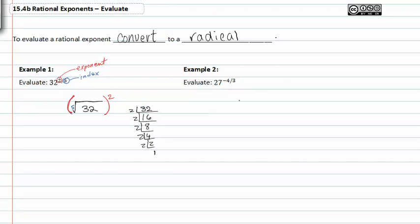divide by 2 we get 1. So 32 is equivalent to 2 to the 1, 2, 3, 4, 5, which is 2^5.